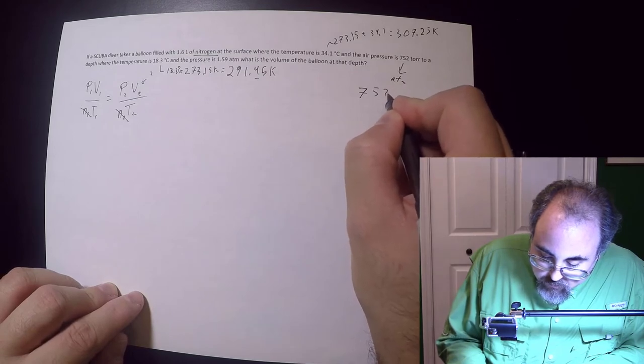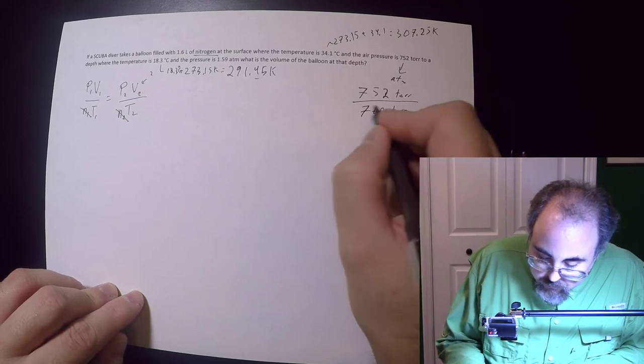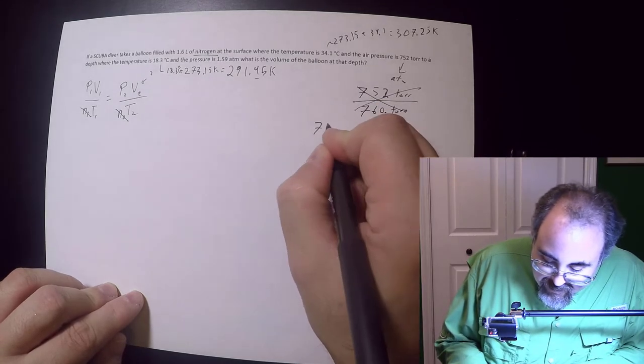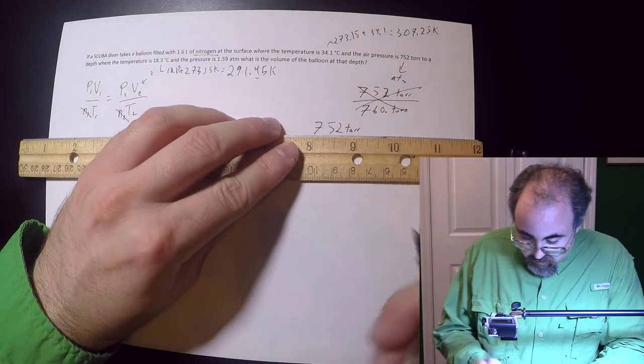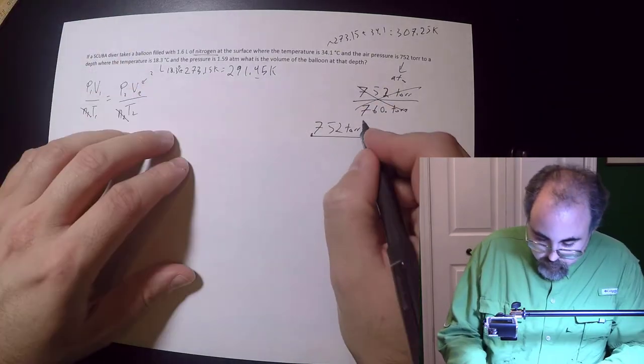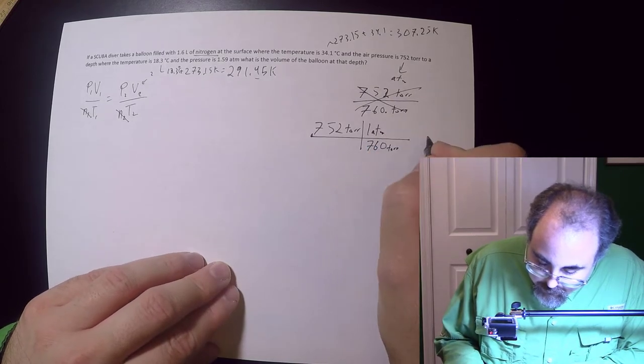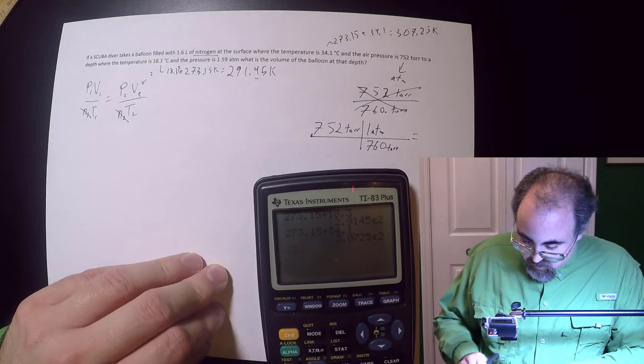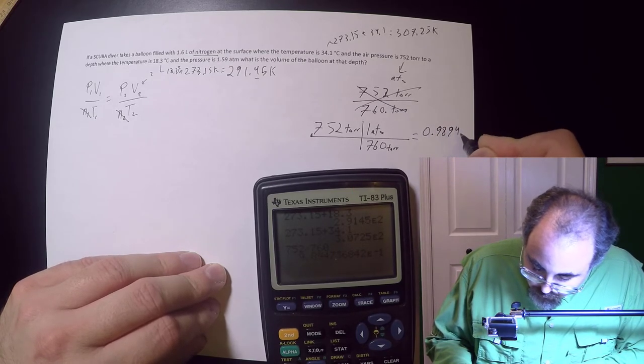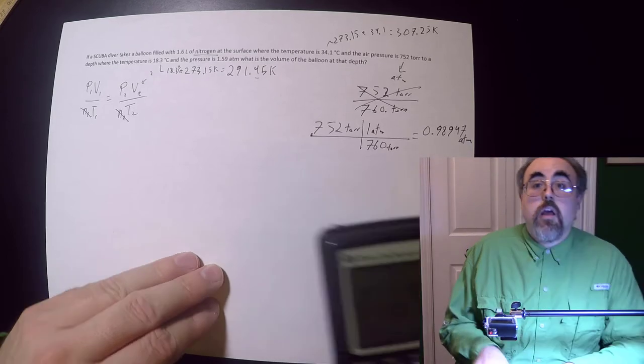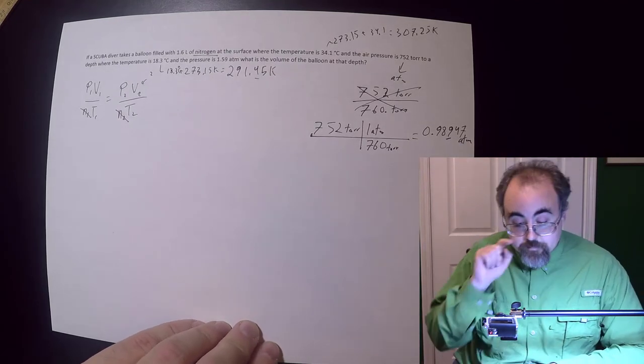So the way I'm going to do that is I'm going to take that 752 torr. And obviously if this was millimeters of mercury, it would be the same thing. I'm going to draw my fraction bar. I'll do 760 torr per one atm. And then now I take my 752 divided by my 760. And boom, I get 0.98947 atm. Once again, those are not all significant. That's 3 figs. This one's actually a definition, so it's exact. Therefore, that's my good number.